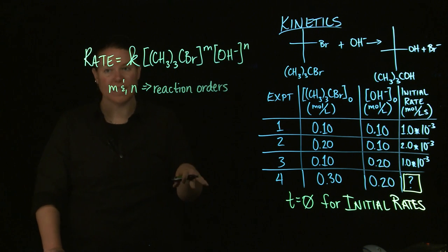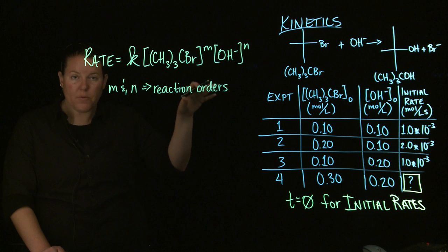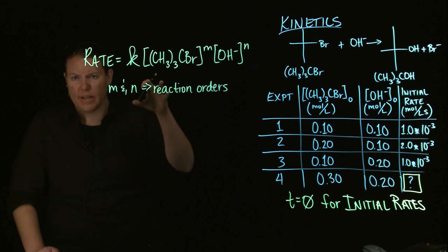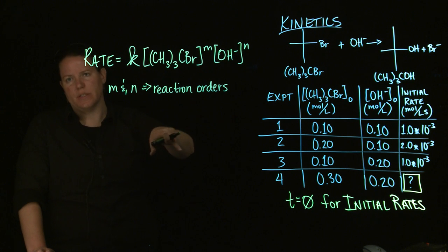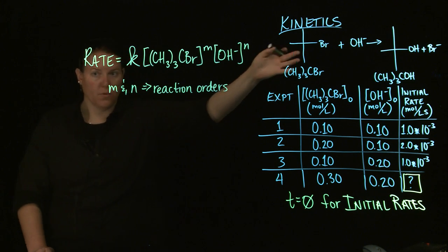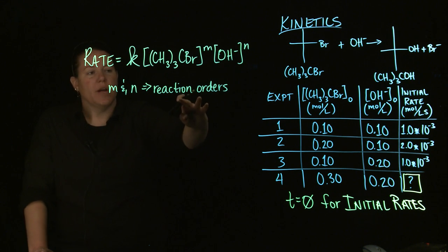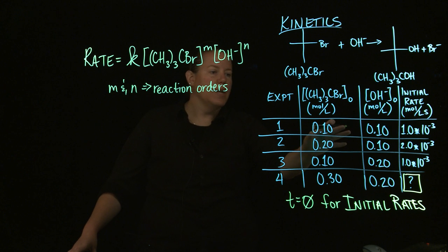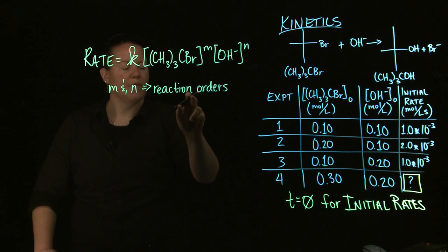Reaction orders are not the same as the coefficients — unless you know that this reaction only happens in one step and you know what the coefficients are. You could also have a reaction that happens in multiple steps, but the reaction orders would only be the coefficients in front of the reactants in the slowest step. Usually you don't have this information — you just have the overall reaction, which is exactly what you have here. You don't know the steps, so we need to find the reaction orders a different way by comparing multiple experiments using different numbers.